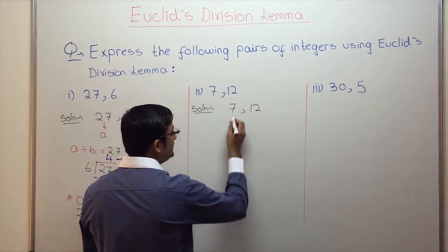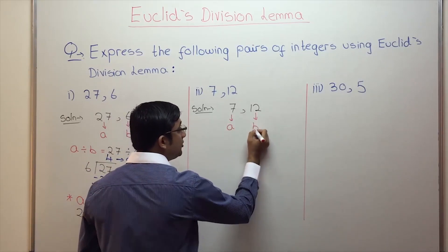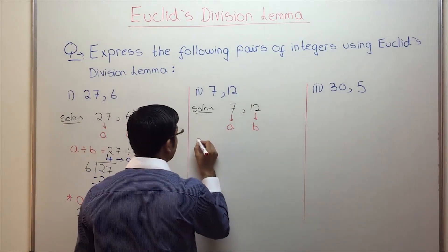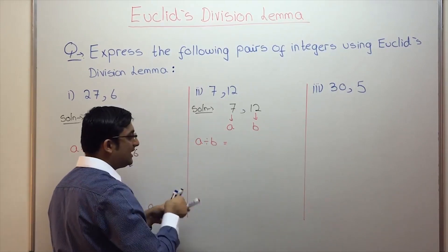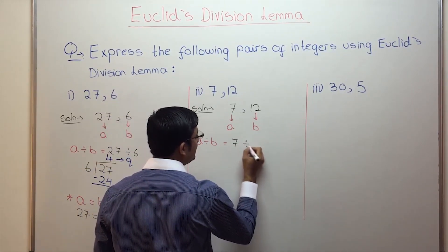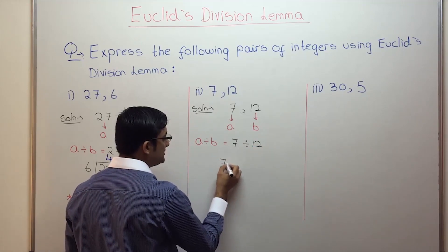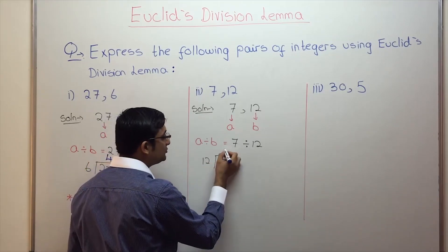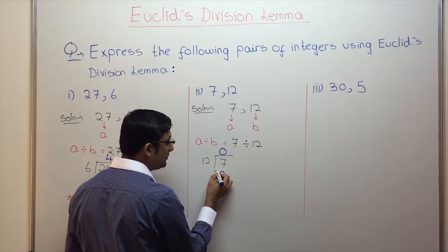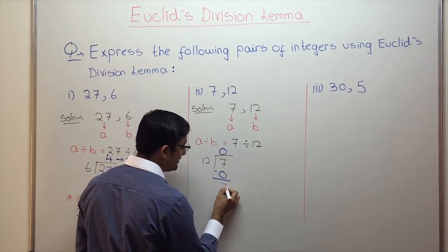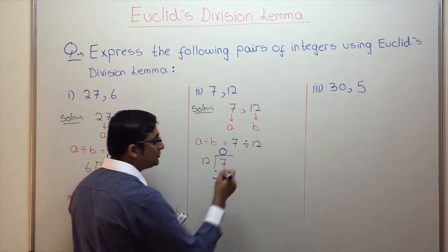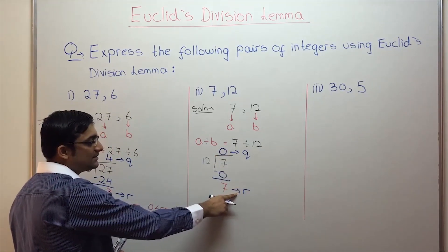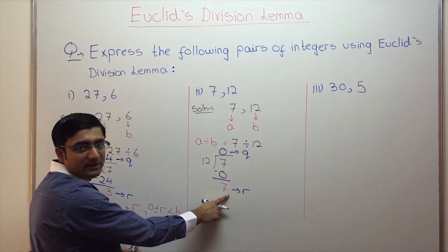Label the first number as A and the second number as B. Often you might think the bigger number should be A — no, the first integer is A and the second is B. Next step: A divided by B, that is 7 divided by 12. Using long division: 12 goes into 7 zero times since 7 is smaller than 12. 0 multiplied by 12 is 0. 7 minus 0 is 7. So the quotient is 0 and the remainder is 7. That is 7 divided by 12 is 0 remainder 7.